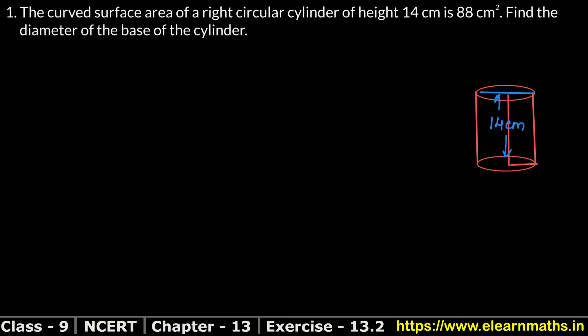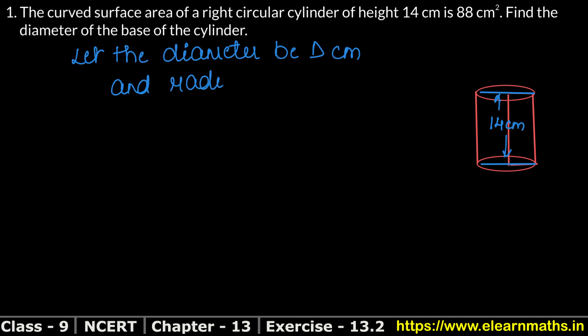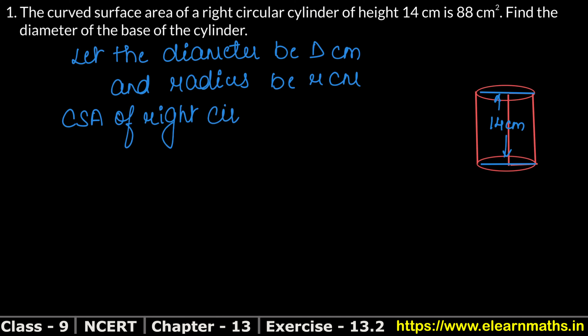We have to find the diameter of the base of the cylinder. Let the diameter be d cm and the radius be r cm. The curved surface area of the right circular cylinder is 88 cm square.